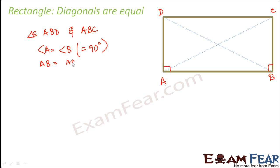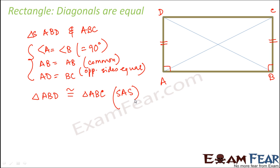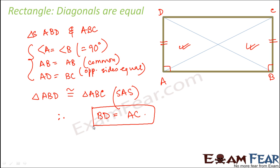We also find that AB equals AB, which is a common side. We also find that AD equals BC, because opposite sides are equal in a rectangle. With all three conditions in place, triangle ABD is congruent to triangle ABC by SAS — side angle side congruency. Since the two triangles are congruent, BD equals AC. And BD and AC are the two diagonals of the rectangle, thus proving that the diagonals of a rectangle are equal.